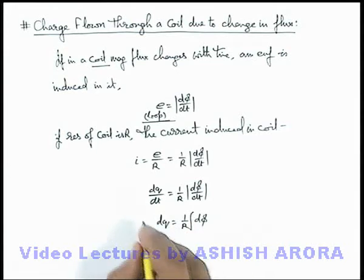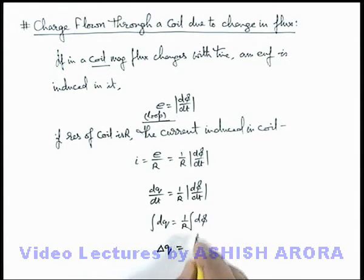And if the same expression is integrated, we can write the total charge flown Δq as magnitude of total change in flux through the coil divided by the resistance, which itself is a useful relation.